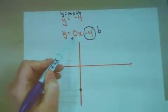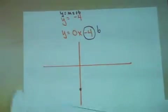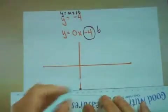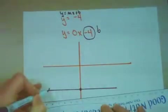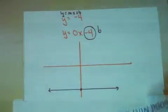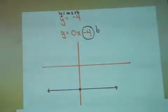0x means there's no rise. All my line is going to do is run, which means I'm plotting a horizontal line. And there is a graph of the equation y equals negative 4.